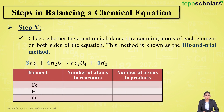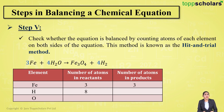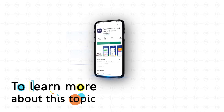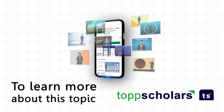Now let's check whether the equation is balanced. Iron: three atoms on reactant side, three on product side. Hydrogen: eight on reactant side, eight on product side. Oxygen: four on reactant side, four on product side. Since all atoms are equal on both sides, it is a balanced reaction. To learn more, download the Top Scholars app.